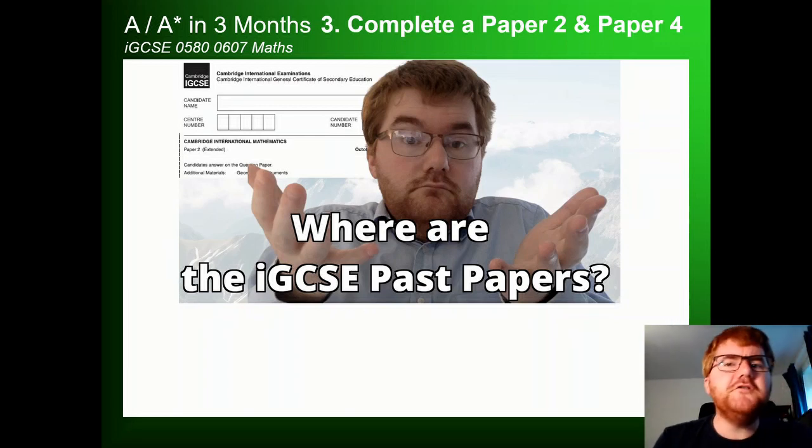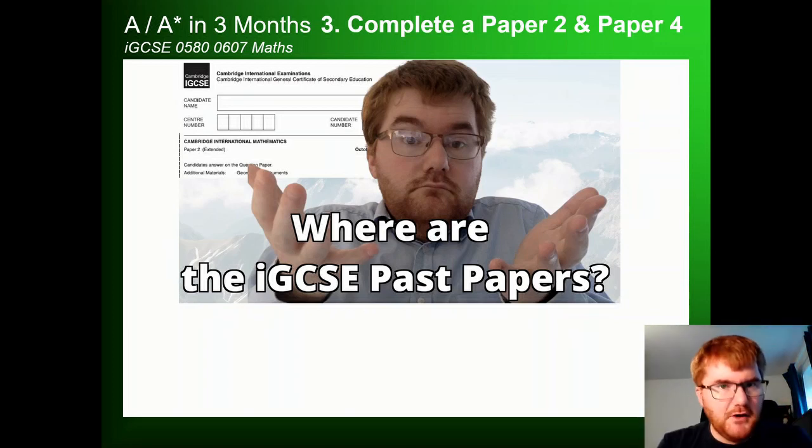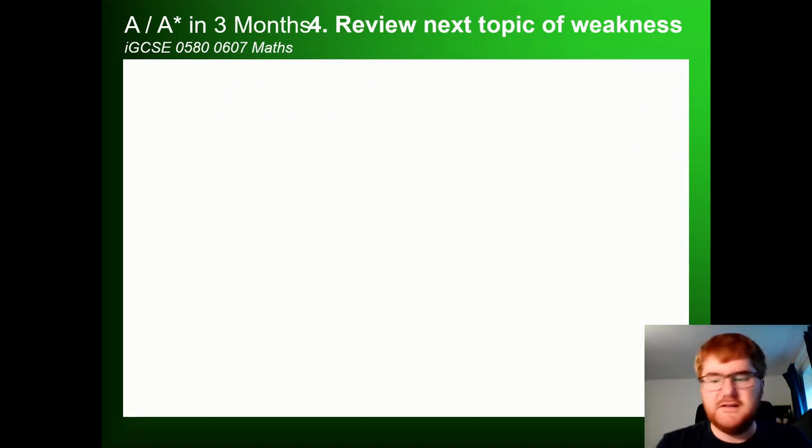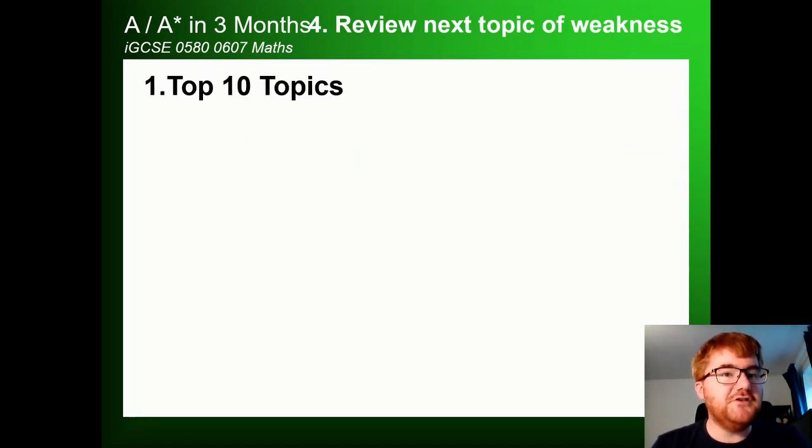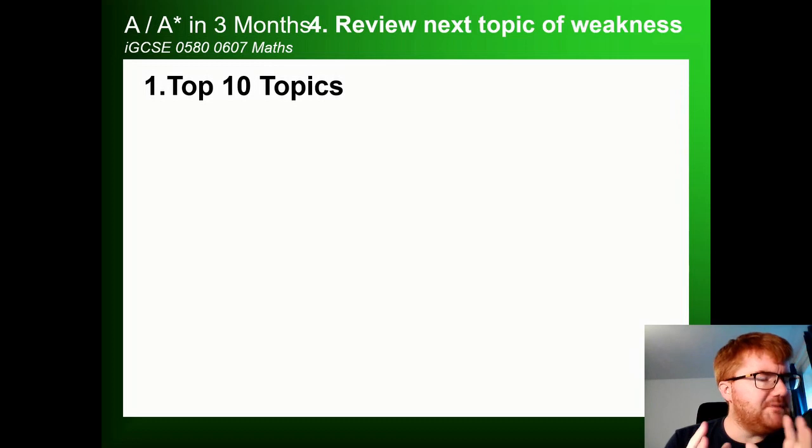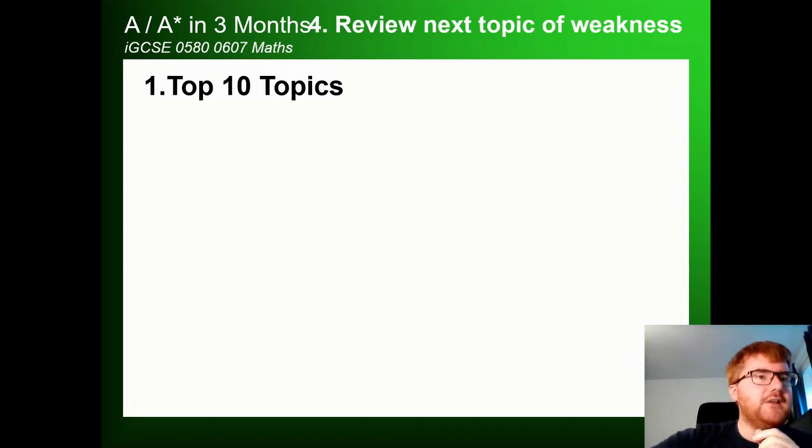So once you've completed that paper two and paper four, you are strengthening those top 10 topics. But then you need to make a list of the next topic of weakness. So the first thing to concentrate on, of course, is the top 10 topics. So go back to the videos that we looked at in step one. Once you're happy with those top 10 topics, then we're going to look at those what I call second tier topics.